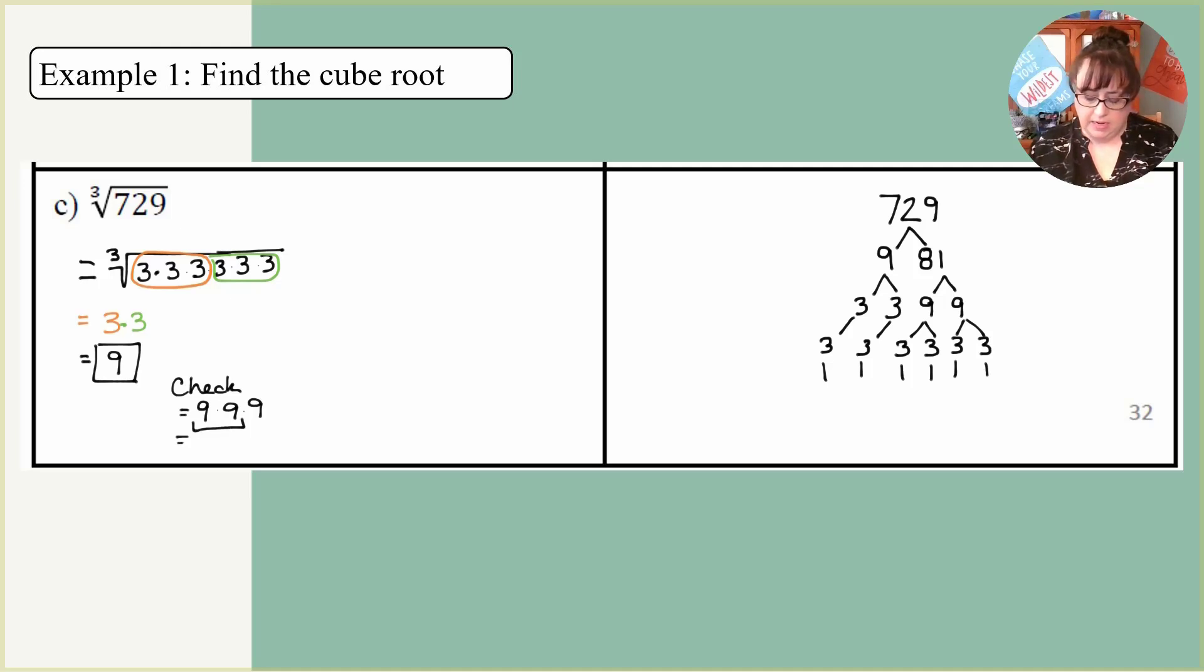So the cube root of 729 is 9. So that means if I wanted to check it, I would do 9 times 9 times 9. Well, 9 times 9 I know is 81. And 81 times 9 I know from what I did up above is 729.